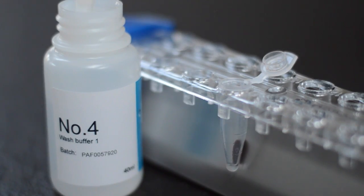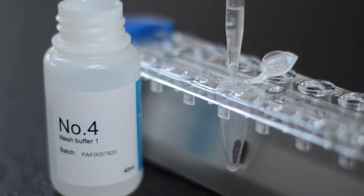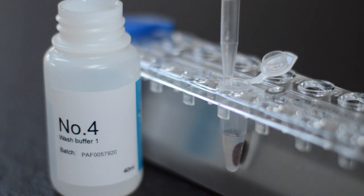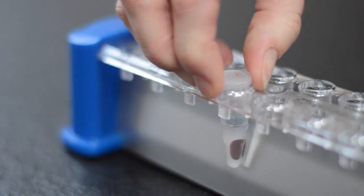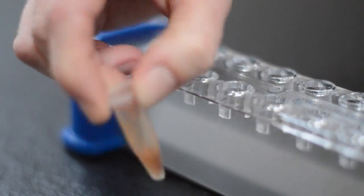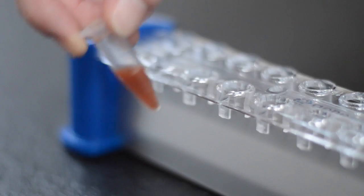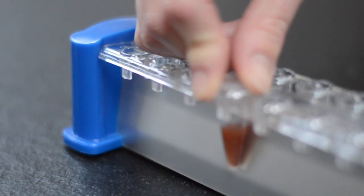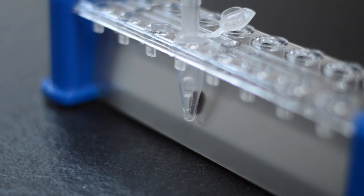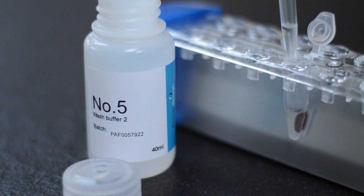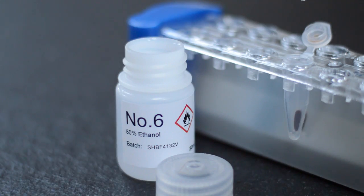Now it's just a matter of washing those particles to get rid of impurities. Add a small volume from tube 4, shake your tube, magnetise again, and remove the excess. Then repeat that process with tube 5 and tube 6.